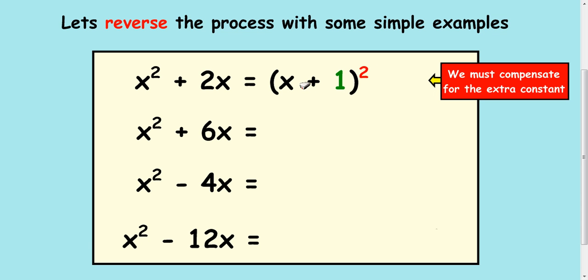if I multiplied this bracket out, if I did (x + 1) times (x + 1), I would get x² + x + x, but I'd get an extra +1. I don't want that here because there's no +1 here. So I need to take it away. And if I multiplied all that out and took the 1 away, I would get this.